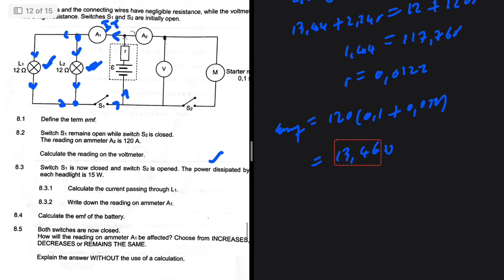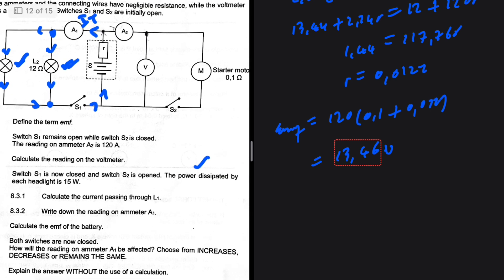And then 8.5: Both switches are now closed. How will the reading on ammeter A1 be affected? Choose from increases, decreases, or remains the same. Explain the answer without the use of calculation. Let me know in the comments. What's your answer? Increases, decreases, or remains the same? Why are you saying so, people?